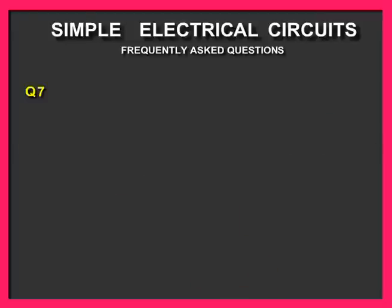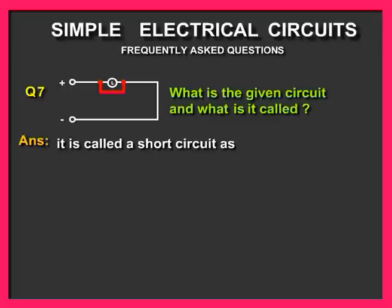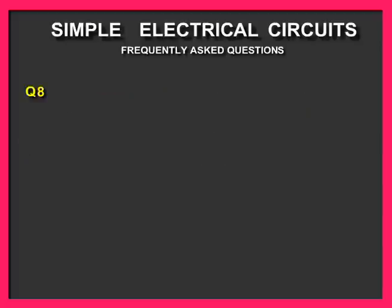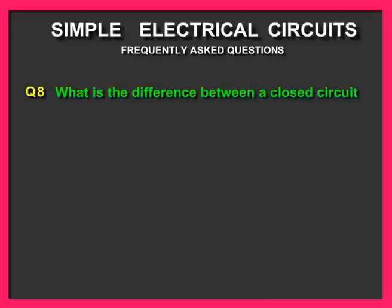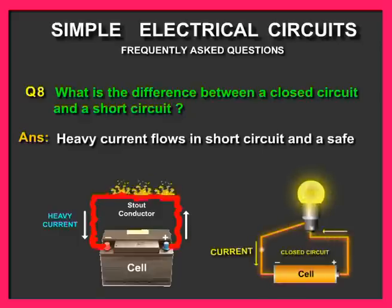Question number seven: What is the given circuit and what is it called? Answer: It is called a short circuit as the positive and negative are directly connected with a stout conductor. Question number eight: What is the difference between a closed circuit and a short circuit? Answer: Heavy current flows in a short circuit and a safe current flows in a closed circuit.